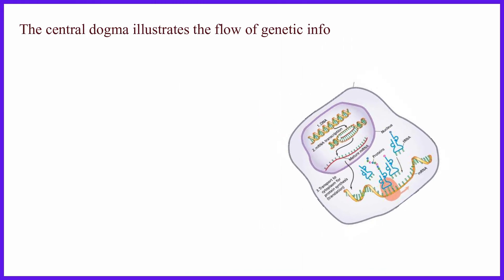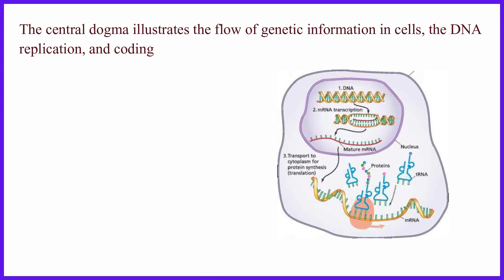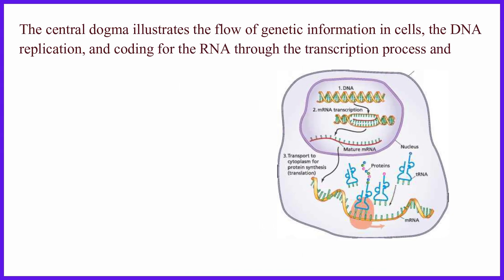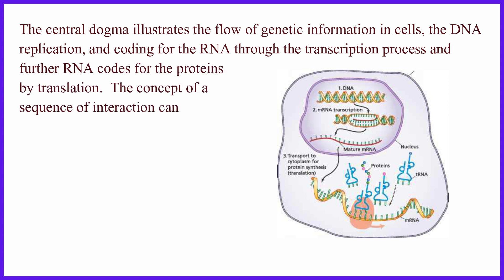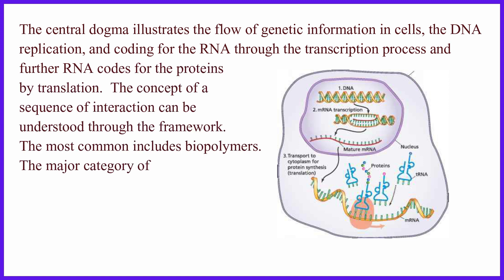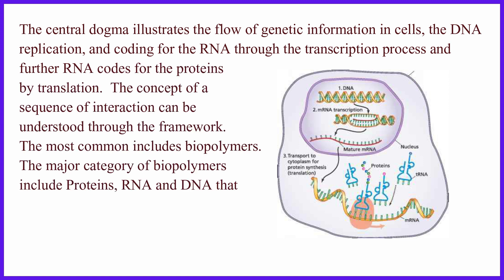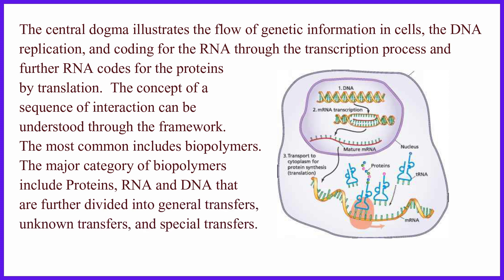The central dogma illustrates the flow of genetic information in cells: DNA replication, coding for RNA through the transcription process, and further RNA codes for proteins by translation. The concept of a sequence of interaction can be understood through this framework.